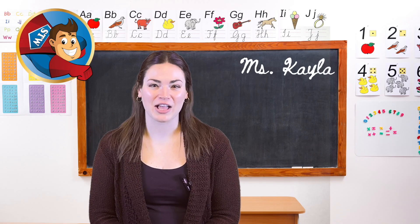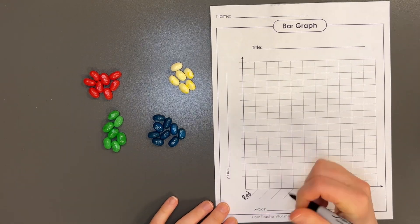Then let's label your blank bar graph sheet for the jelly bean activity. Write the colors of the jelly beans along the bottom axis.